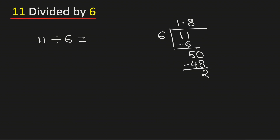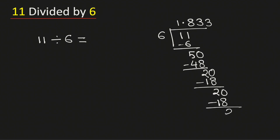We borrow 10 because 2 is less than 6. Now 6 times 3 is 18; subtract, we get 2. We borrow 10 again because 2 is less than 6. 6 times 3 is 18; subtract, we get 2 again.